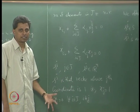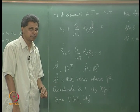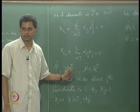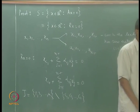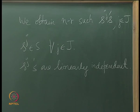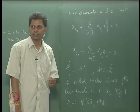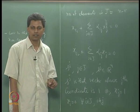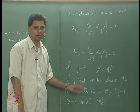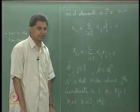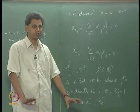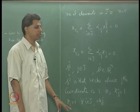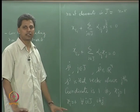The first step is proving these vectors are independent; the second step is proving they form a spanning set. If both hold, then the subspace S has dimension n minus r. Next I show that any solution x* of Ax = 0 is a linear combination of these n minus r vectors. The only procedure to get solutions is to assign values to the free variables and back-substitute.